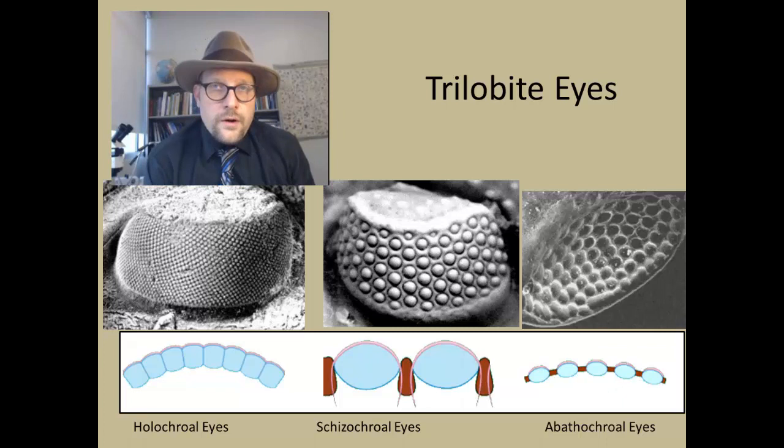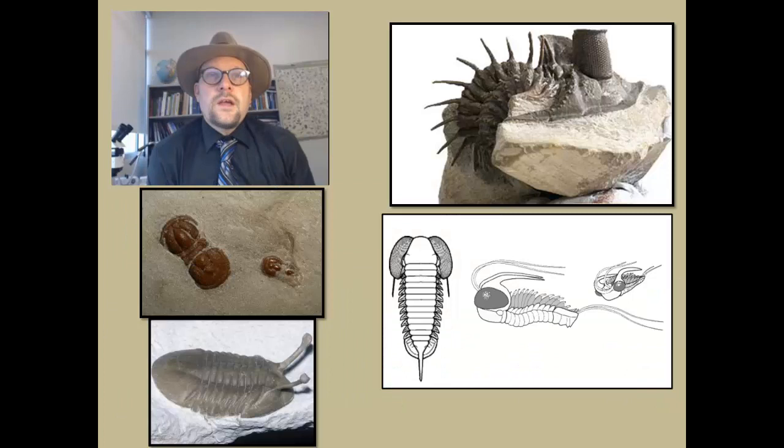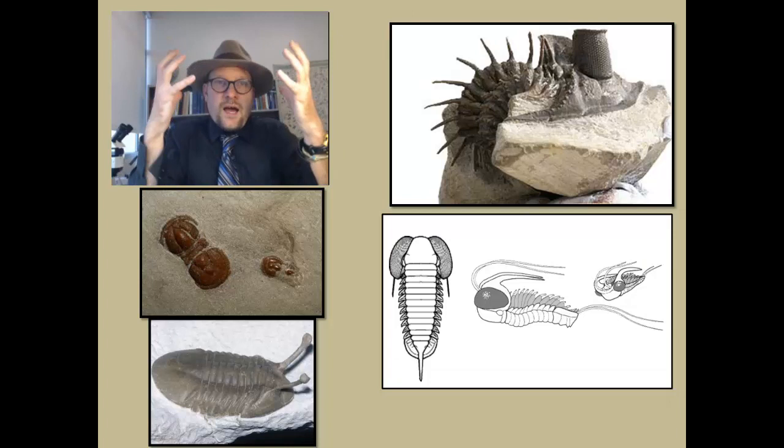The last type of eye of trilobites are the abathochroal eyes. They are found in the order Agnostida, which includes many blind trilobites. As such, it probably represents a reduced or vestigial schizochroal condition that we see. So they are kind of on the way of losing their eyes and becoming blind, which is kind of interesting.